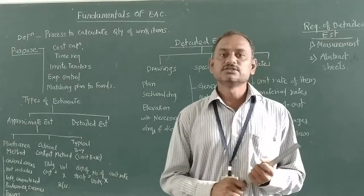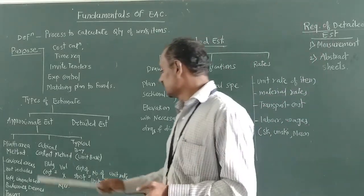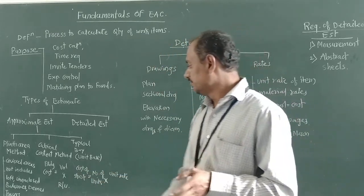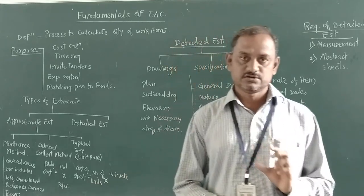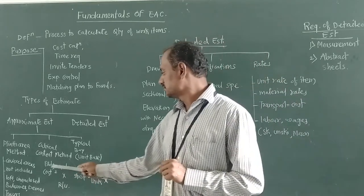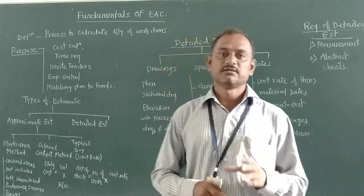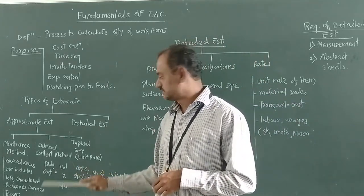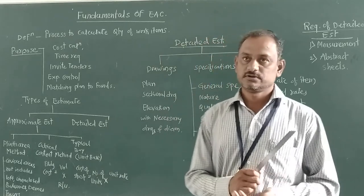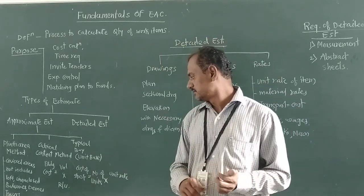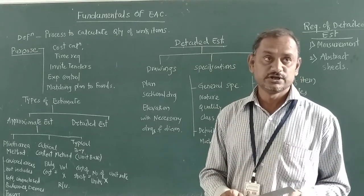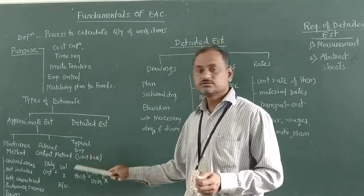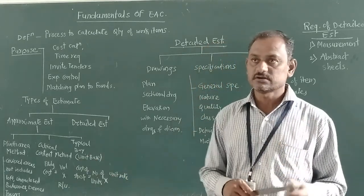The cubical content method: in this method, the building cost is calculated by using the volume of the building multiplied by the rate per unit of building. This is a very simple method to calculate the approximate estimate. We just apply the formula: volume of building multiplied by rate per unit. The typical bay method is also called the unit bay method, and it is based on the units of that particular building.